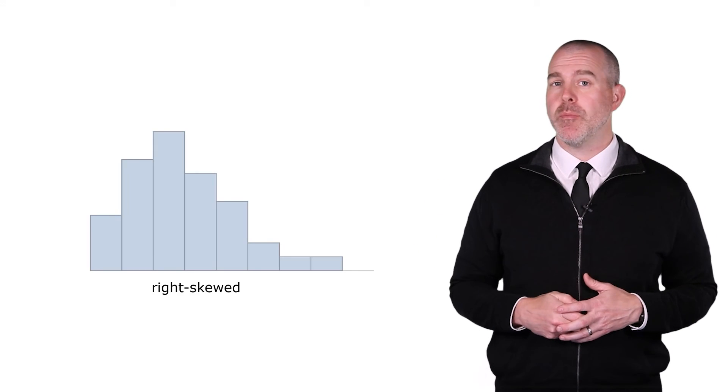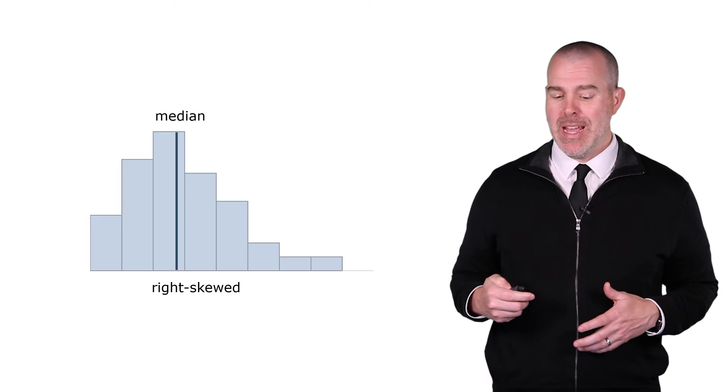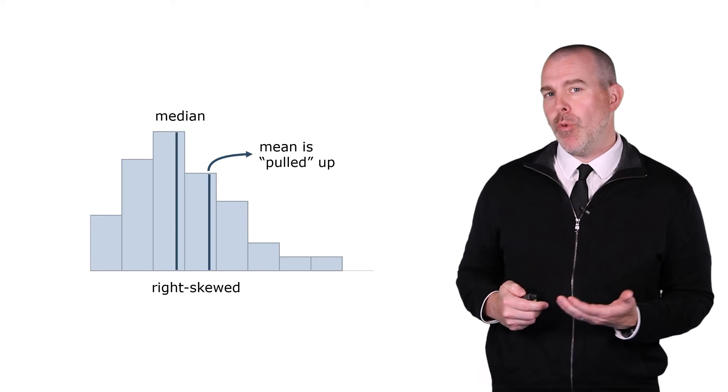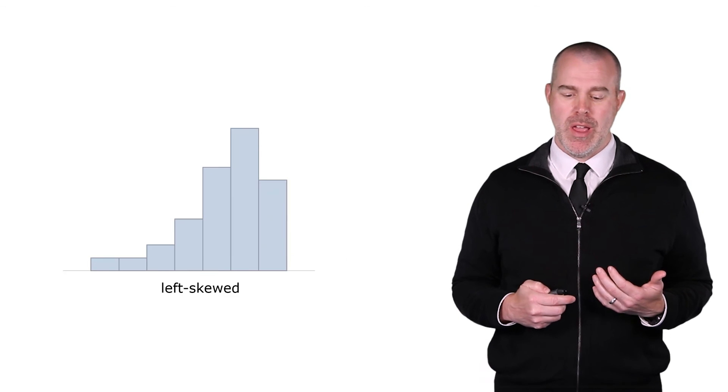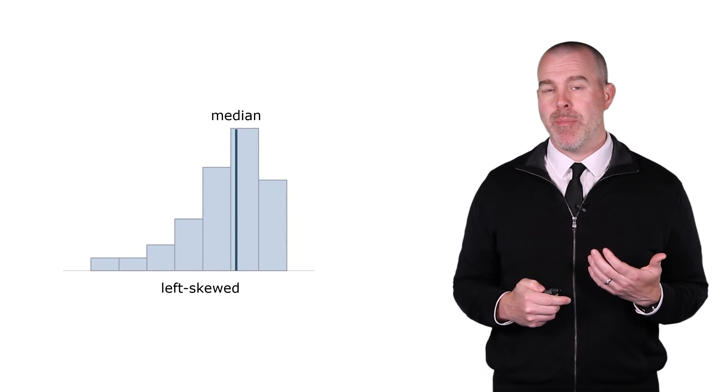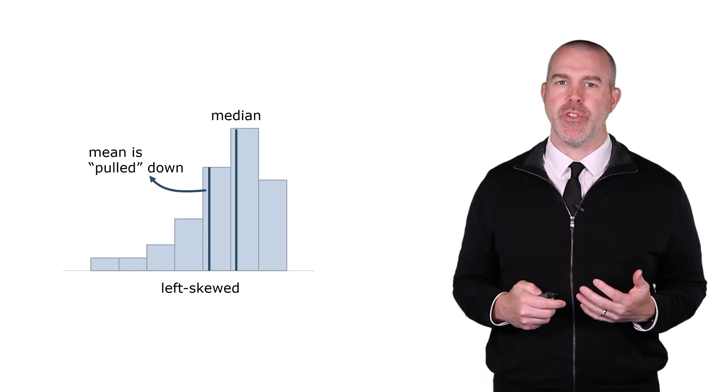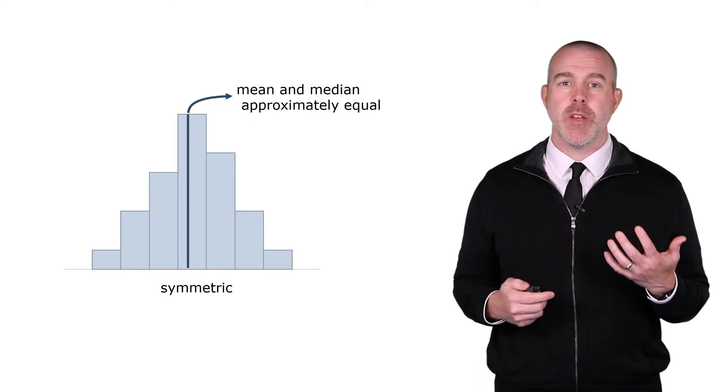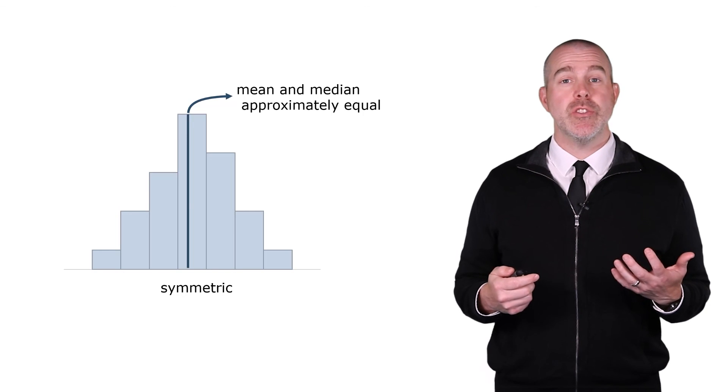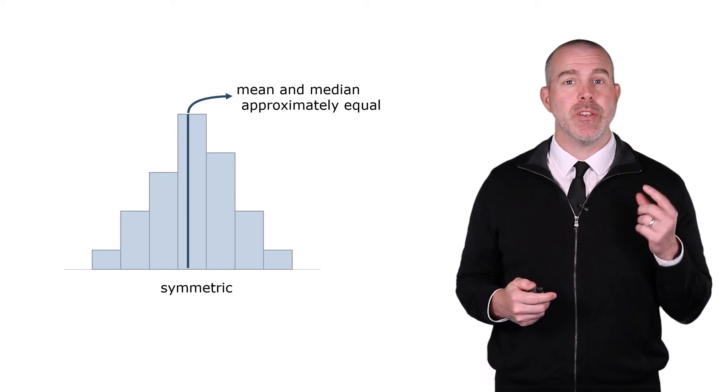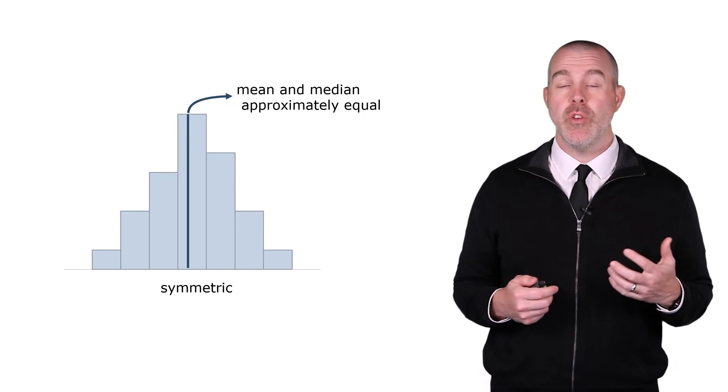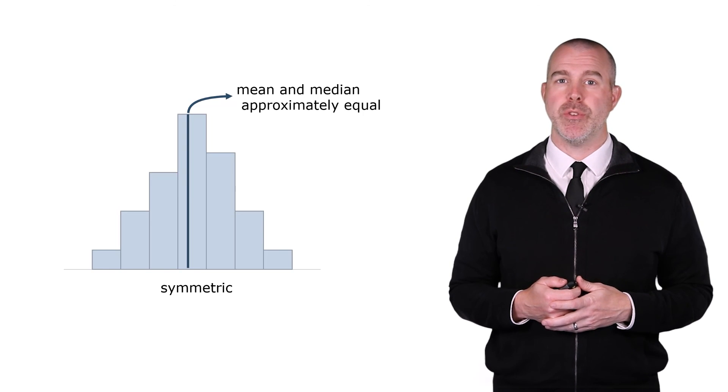One last final note here is looking at the mean and median lets us know something about the distribution shape. For example, if we have some right skewed data, the median would be here, and the mean would be pulled up by that right skew. Whereas with left skewed data, we have the median, and then the mean is pulled down by that left skew. Whereas with symmetric data, the mean and median are going to be approximately equal. So this is useful if you don't have the histogram, but you have the mean and median, you can use those to also get an idea about the shape of the distribution.